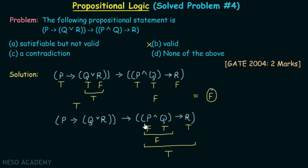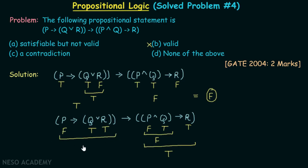With p false, q true, and r true, let's plug these values into the full compound proposition. q is true, r is true, p is false — we know that false implies anything is true. Therefore, this compound proposition is true. Finally, true implies true is true.